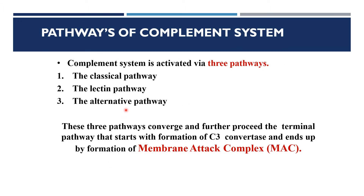The complement system is activated by three pathways: classical, lectin, and alternative. These three pathways converge and proceed through the terminal pathway, which starts with the formation of C3 convertase and ends with the formation of the membrane attack complex.